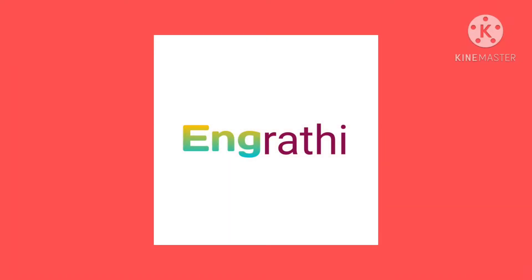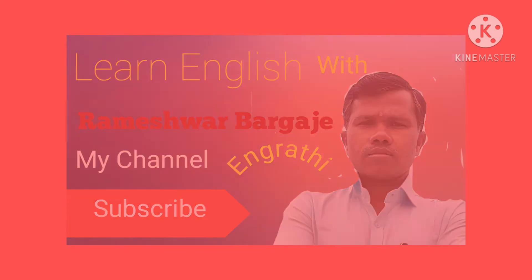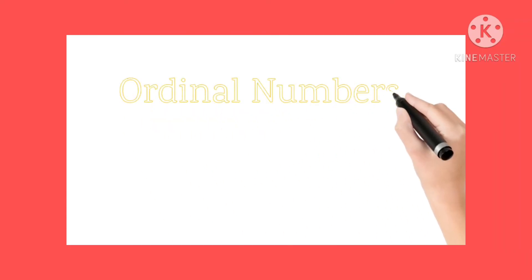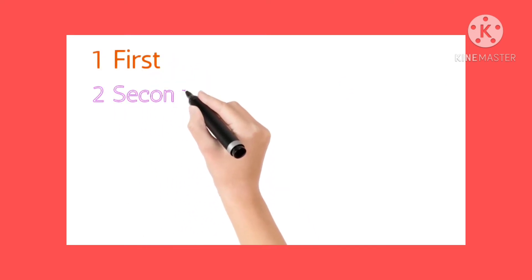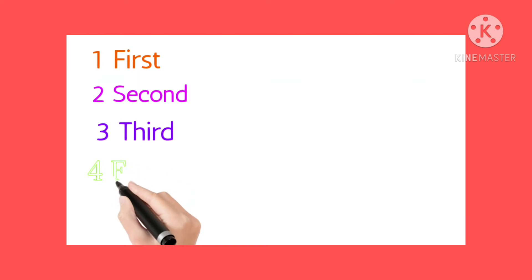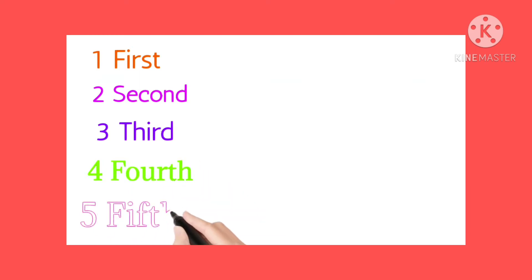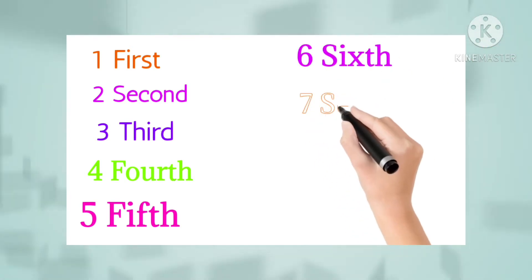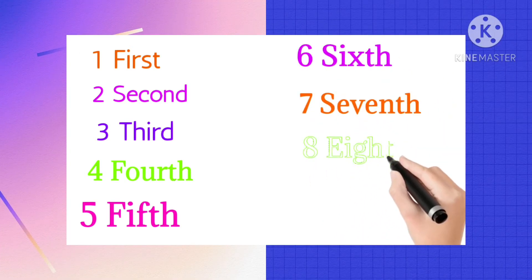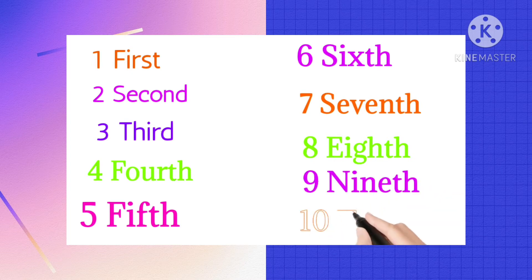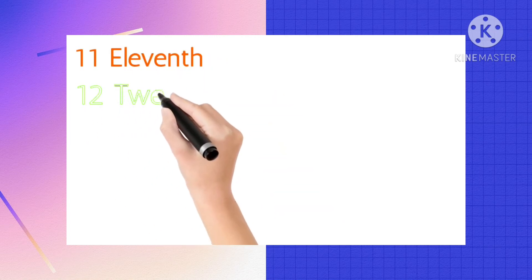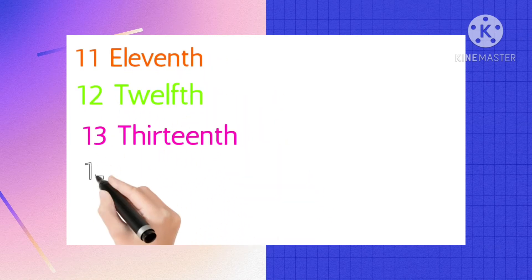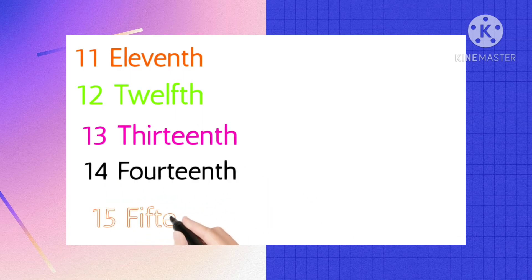Welcome to my channel — please like, subscribe, and share it. Hello friends, today we are going to learn ordinal numbers in English: first, second, third, fourth, fifth, sixth, seventh, eighth, ninth, and 11th, 12th, 13th, 14th, 15th.